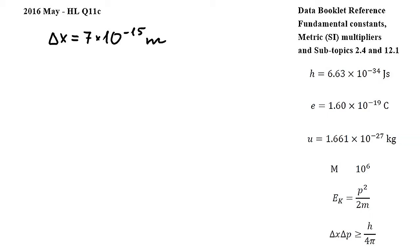In this question we have to find the kinetic energy of an alpha particle confined in a gold nucleus. We will start by using this equation from subtopic 12.1, where delta x is the uncertainty in the position, delta p is the uncertainty in the momentum, and h is Planck's constant.